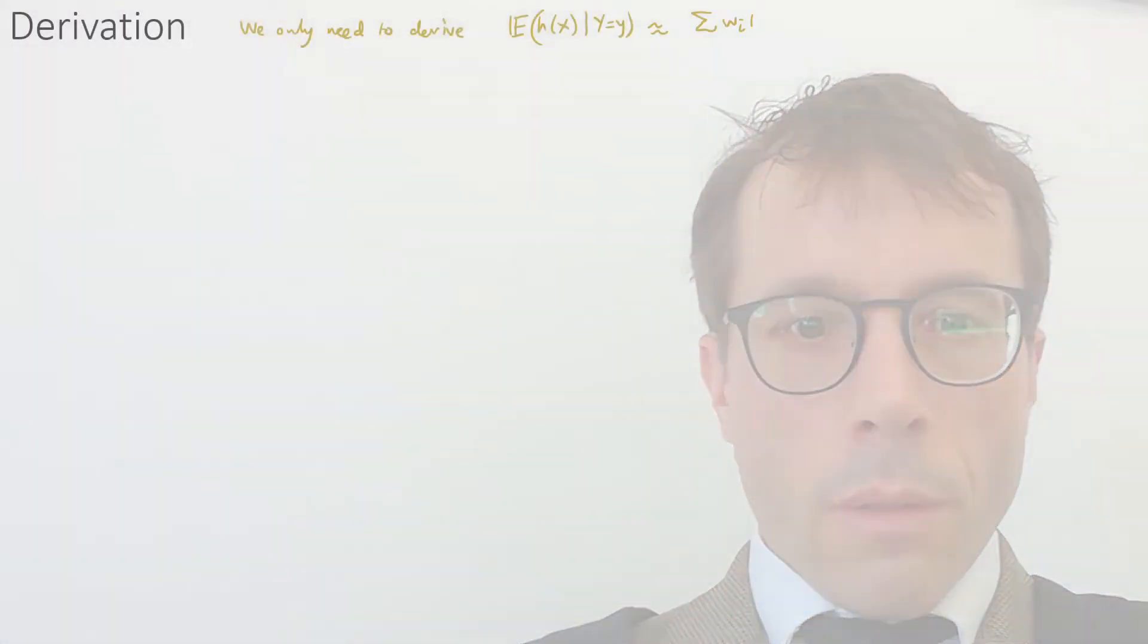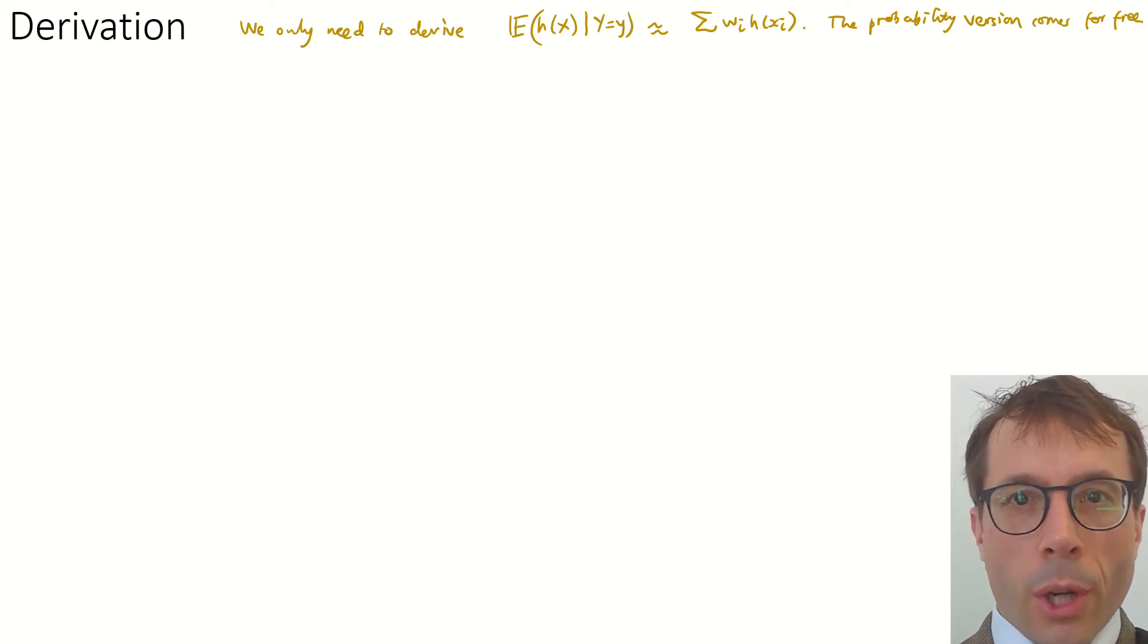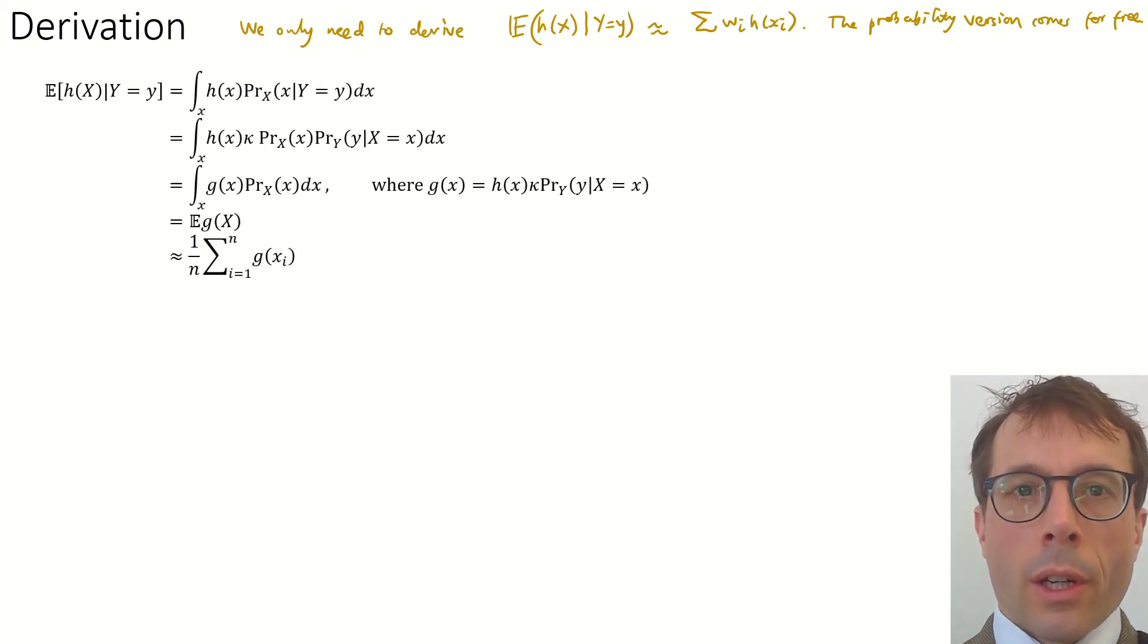To finish off this video, I want to look at the derivation of the computational Bayes method. You certainly don't need to know this, but I'm just including it here because it's fairly simple and because it's nice to see how it drops out of Monte Carlo. First, we'll only bother deriving the formula for conditional expectation. We saw in the last video on Monte Carlo that the formula for conditional probability is just a special case of this, so this is all we need to derive. Here's the argument. We start off with the expectation we want to work out.